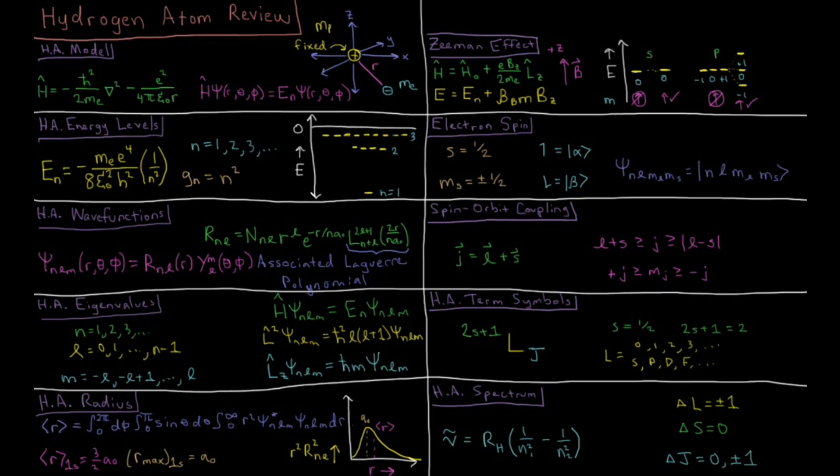This video is a review of the hydrogen atom in quantum mechanics. We start with the hydrogen atom model, with a proton fixed at the origin and an electron free to move around it in three-dimensional space. The distance between the proton and electron is called R.